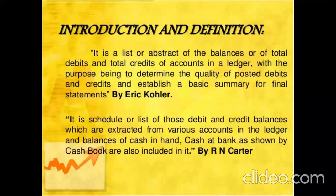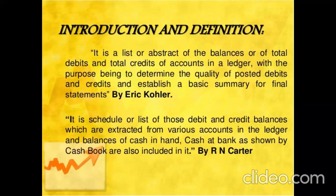Trial balance is a list or abstract of the balances, or of total debits and total credits of accounts in a ledger. When the primary books of journal entry are closed, ledgers are prepared. All journal entries are posted into the ledger and the summary of that ledger is the trial balance. Trial balance is also the base for preparing final accounts — that is trading account, profit and loss account, and balance sheet.